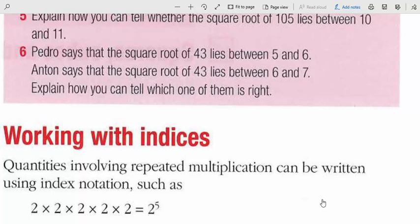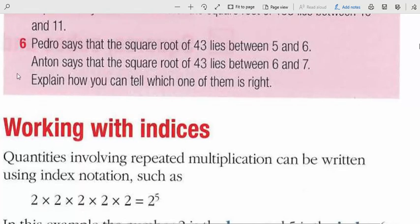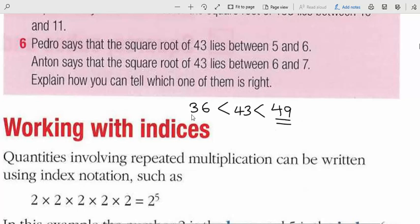Question 6: Pedro says the square root of 43 lies between 5 and 6; another student says it lies between 6 and 7. To check, find the perfect squares nearest to 43: 36 is less than 43, and 43 is less than 49. Both 36 and 49 are perfect squares. The square root of 36 is 6 and the square root of 49 is 7, so the square root of 43 lies between 6 and 7.